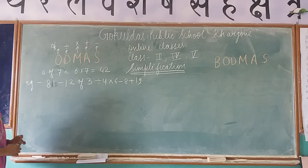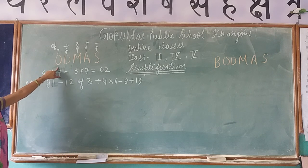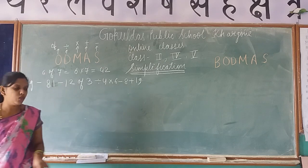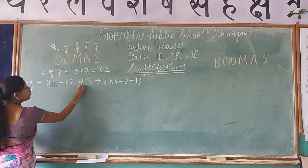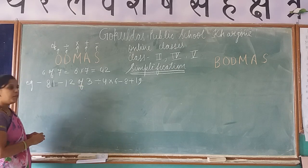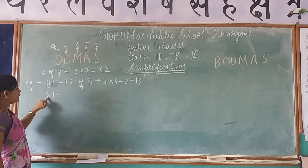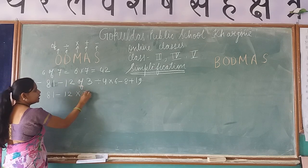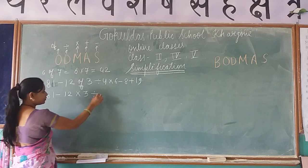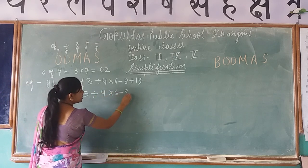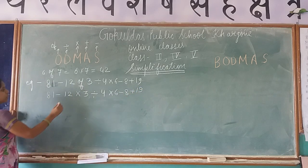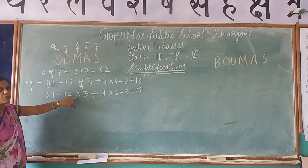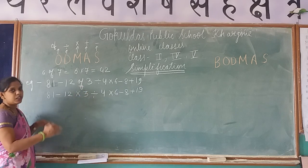According to the ODMAS rule, our first preference goes to 'Of'. Is there 'of' in this question? Yes. So in place of 'of' we write the multiplication sign. The rest of the question stays as it is: 81 minus 12 multiplied by 3 divided by 4 multiplied by 6 minus 8 plus 19. We multiply 12 by 3. 3 twos are 6 and 3 ones are 3, so 12 times 3 is 36. The rest of the numbers and signs remain as they are: divided by 4, multiplied by 6, minus 8, plus 19.